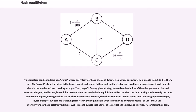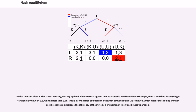For example, if 100 cars are traveling from A to D, then equilibrium will occur when 25 drivers travel via one route, 50 via another, and 25 via a third. Every driver now has a total travel time of 3.75. Notice that this distribution is not actually socially optimal. If the 100 cars agree that 50 travel via one route and the other 50 through another, then travel time for any single car would actually be 3.5, which is less than 3.75. This is also the Nash equilibrium if the path between B and C is removed, which means that adding another possible route can decrease the efficiency of the system, a phenomenon known as Braess's paradox.